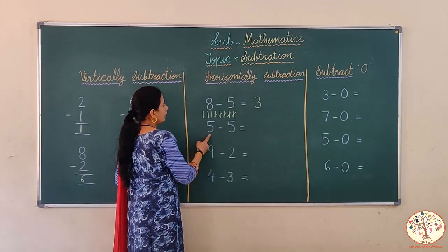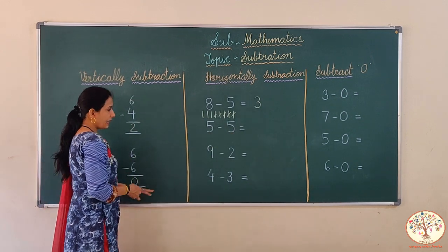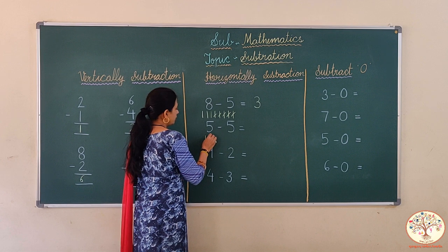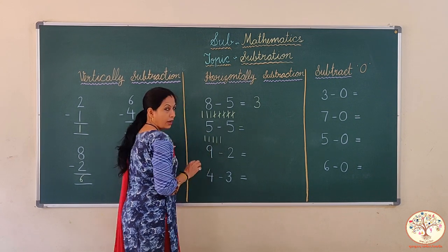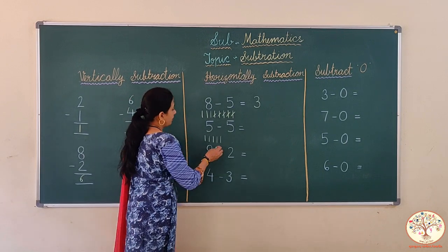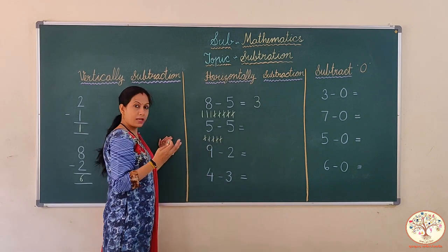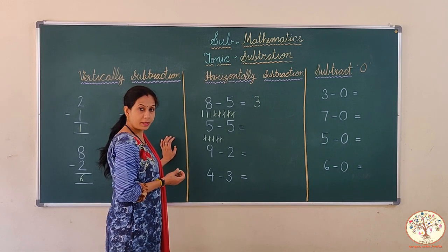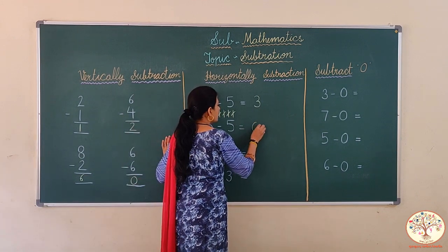Now look here. 5 minus 5. जैसे हमने 6 minus 6 किया था, इसमें भी 5 minus 5 है. So let's draw 5 lines: 1, 2, 3, 4, 5. अब इसमें से 5 lines को minus करना है: 1, 2, 3, 4, 5. How many lines are left? No lines. So the answer will be 0. 5 minus 5 is equal to 0.